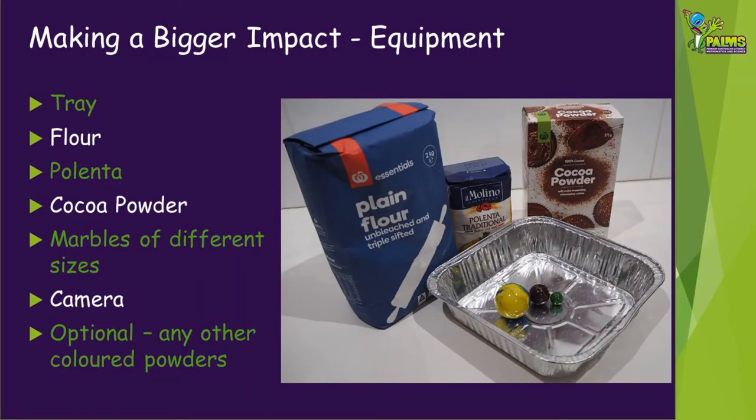A variation on this experiment that you might like to try is what we'll name making a bigger impact. You'll need the following equipment: a tray — this one doesn't need to be as large as the first experiment — some flour, some polenta and some cocoa powder. You can use any fine grains or powders but they need to be different colours from each other; you can use more than three if you'd like. Your impactors this time will be marbles of different sizes, or other hard balls. You can get some great videos or photos from this experiment, so grab a camera or phone if you have one.